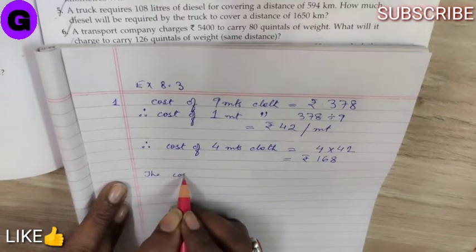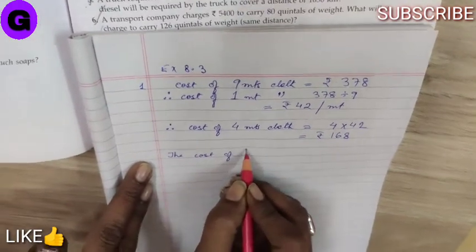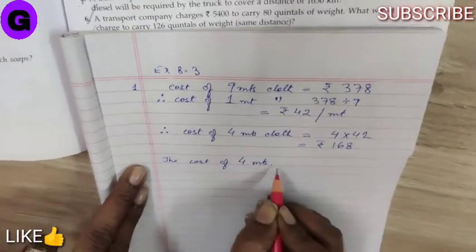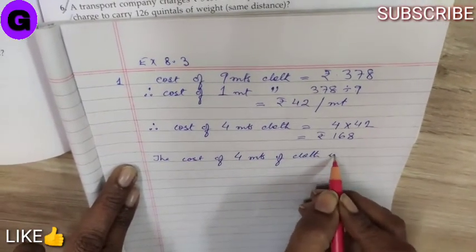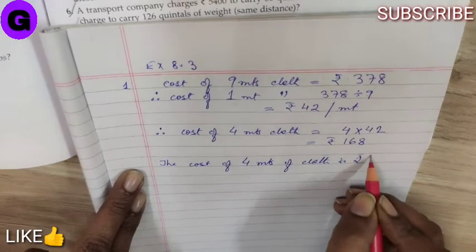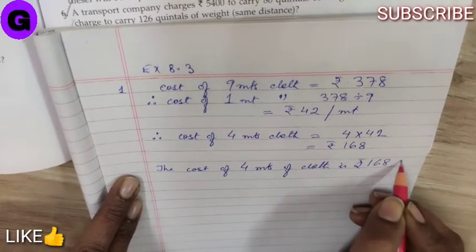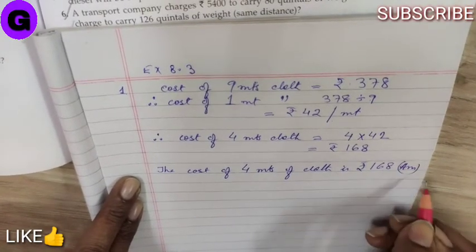So, the cost of 4 meters of cloth is rupees 168. This is the answer.